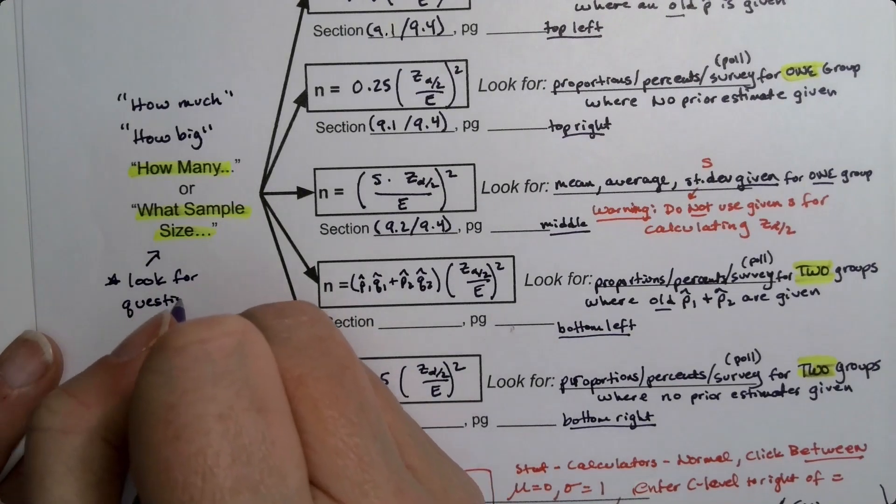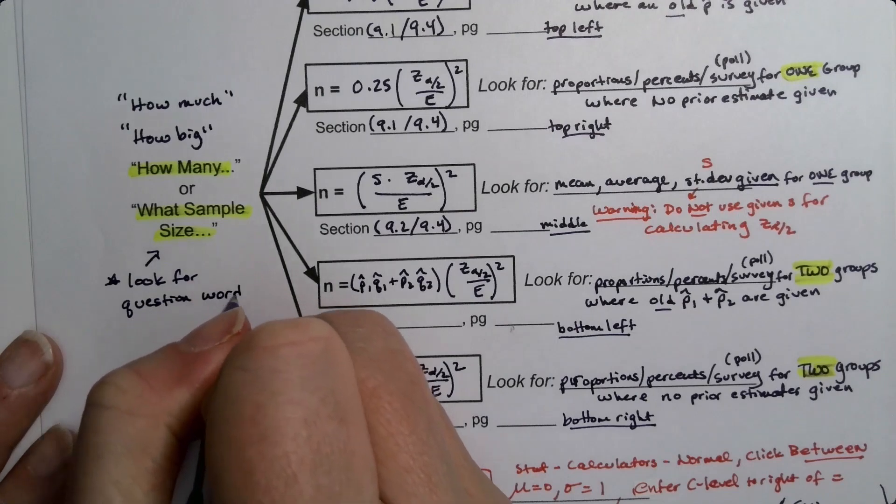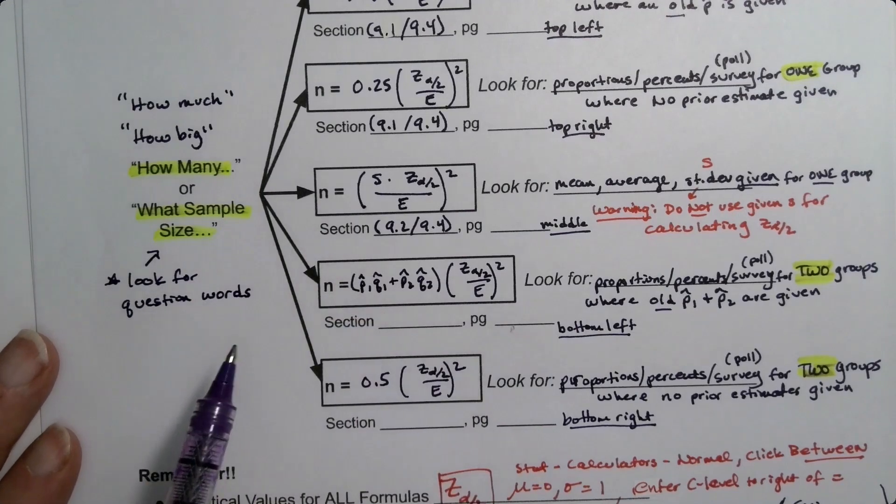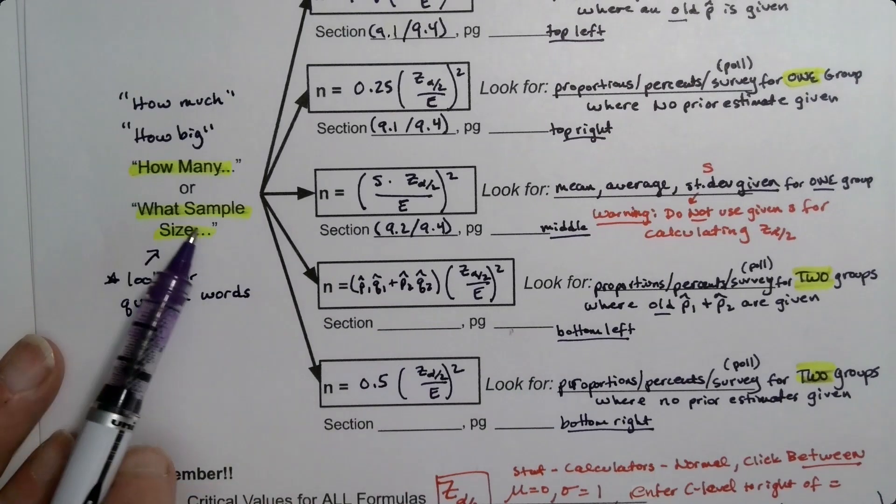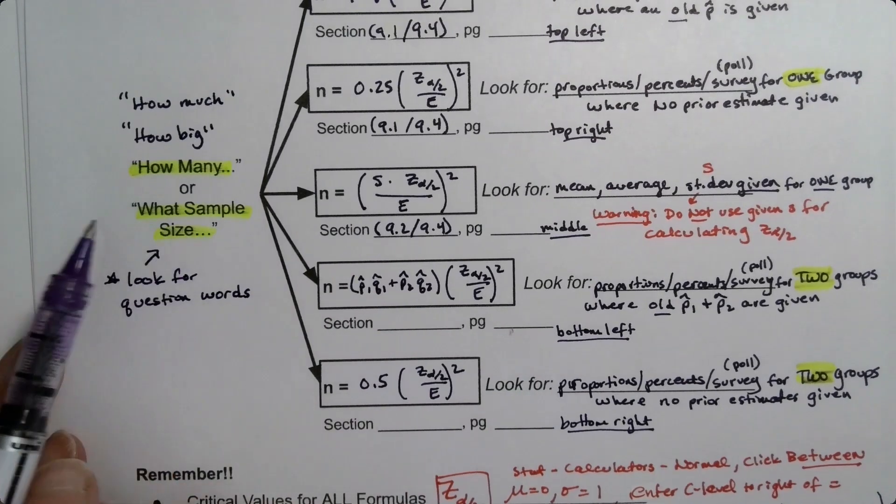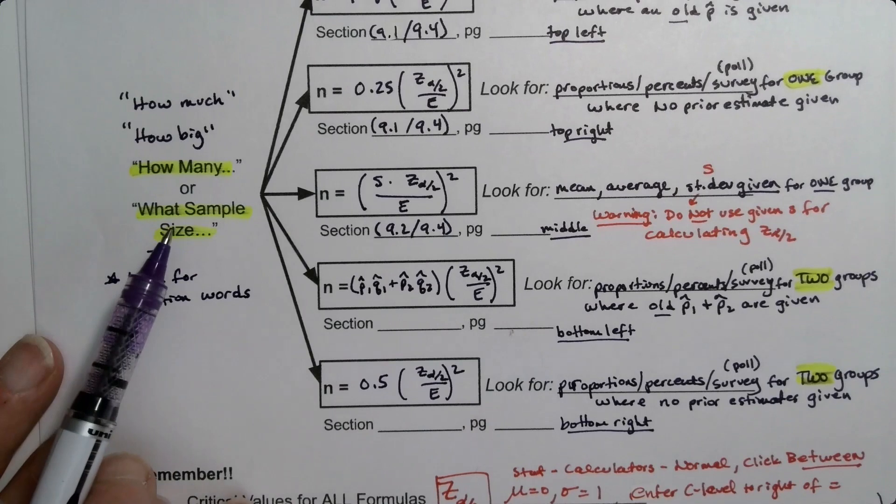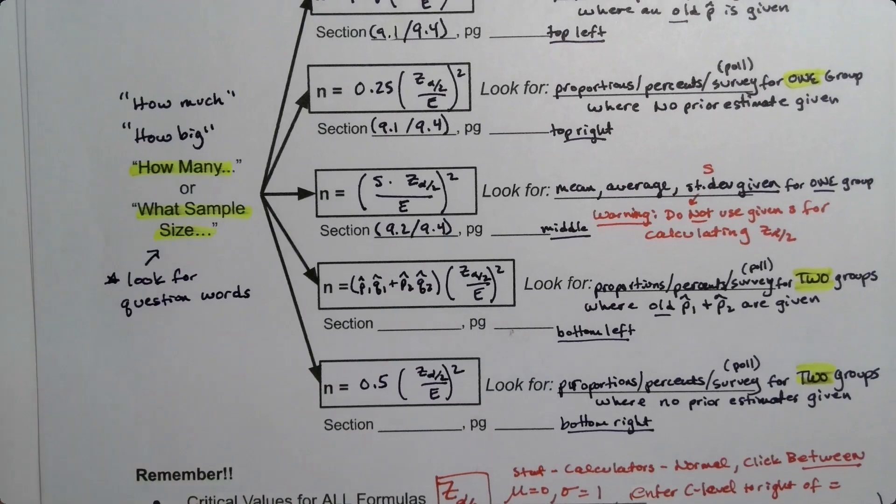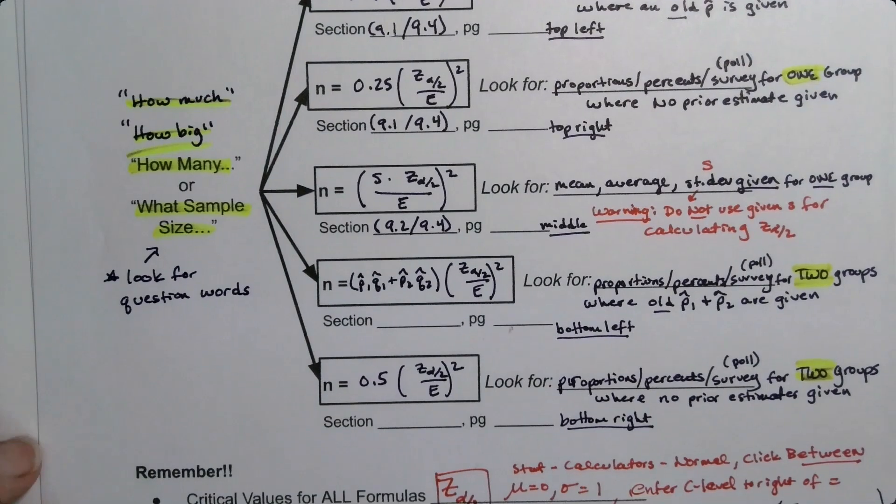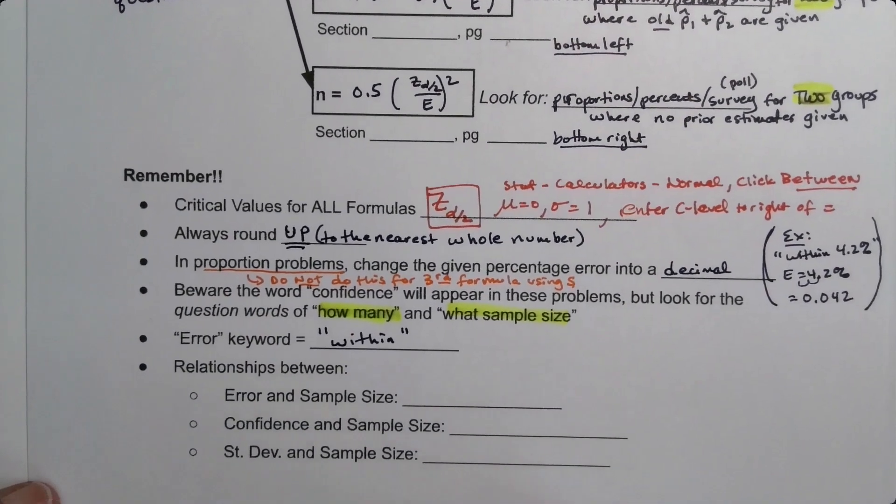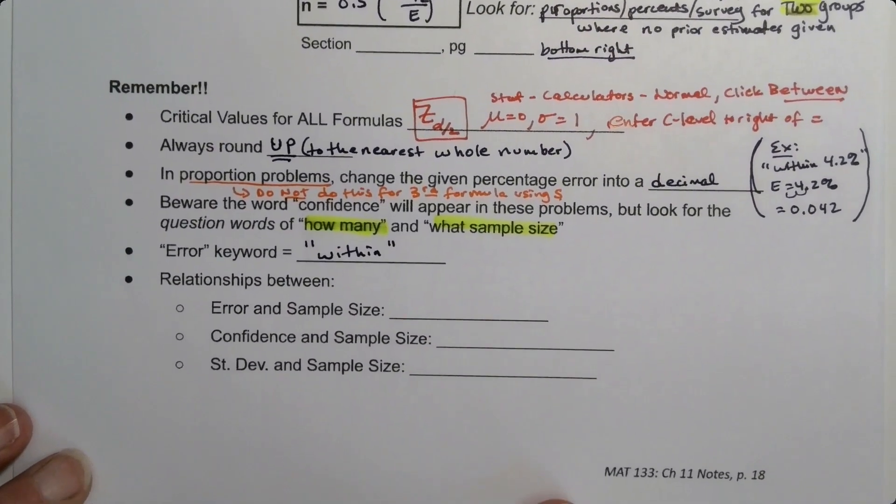You've got to look for the question words, because if it's asking you to make a confidence interval, great, then that's the previous flow chart. But if it's asking you what sample size do I need to make a confidence interval? Well that's a different question. That's a sample size question. So look for those question words. Be warned, these can be tricky to spot sometimes.